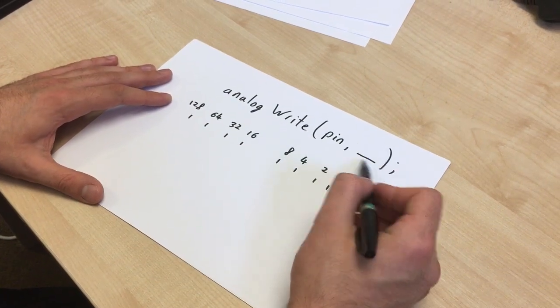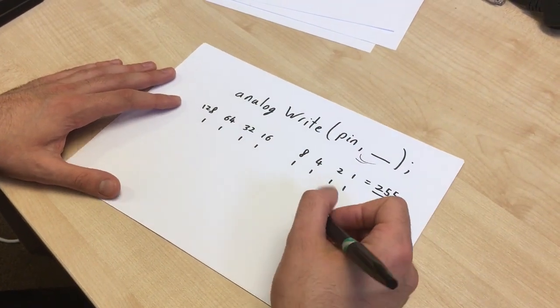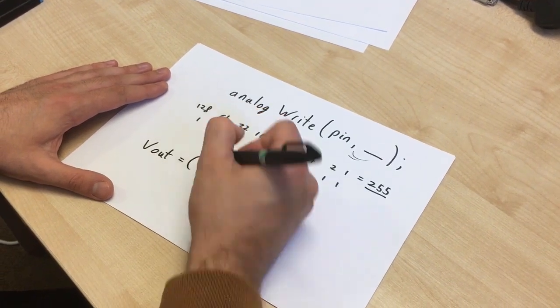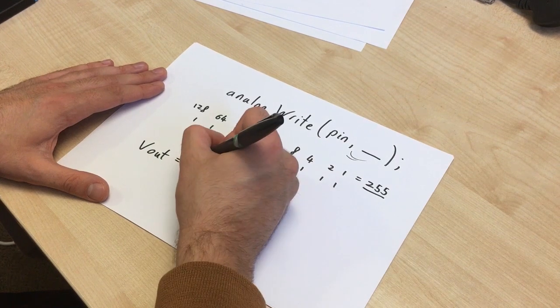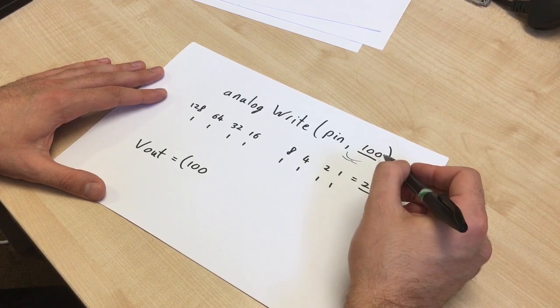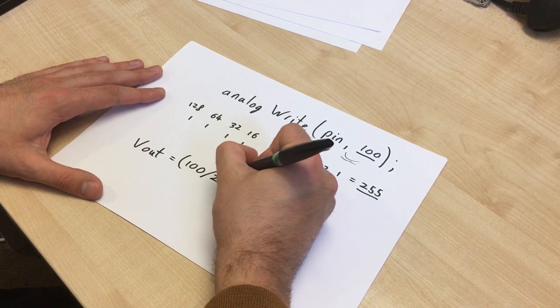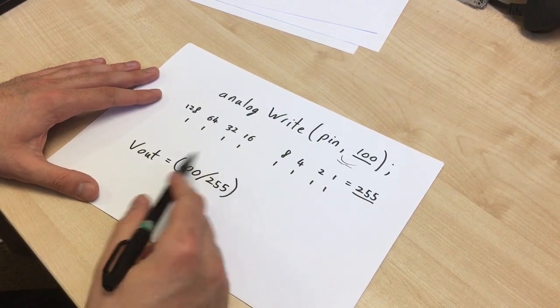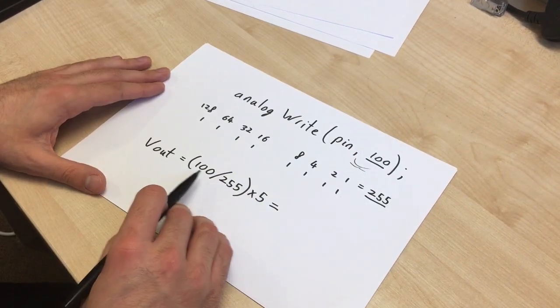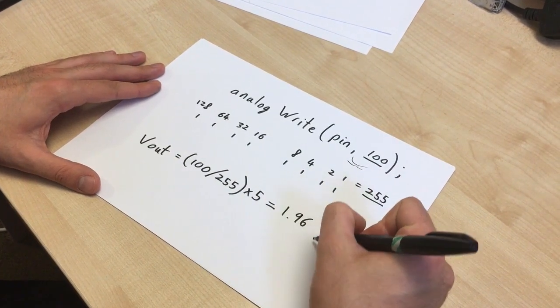So, how do we know, based on the value we put here, what voltage we're going to get out? So, this is where the math comes in. What we do is, voltage out is equal to whatever value we write here. So, say we write 100 here. So, if we've written 100 here, this is how we'd work out the voltage that was being output. So, we'd say the value written here, divided by the max value, which is 255. And then we times that by the max voltage that we can output, which is 5 volts for the Arduino. And 100 divided by 255, times by 5, is 1.96. And that would be in volts.